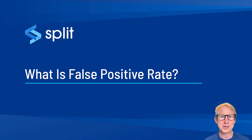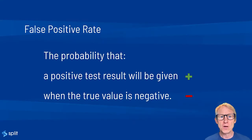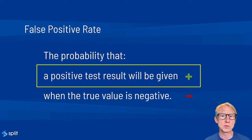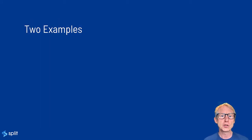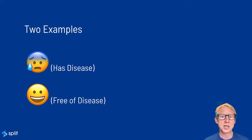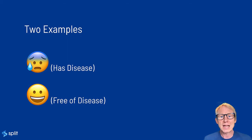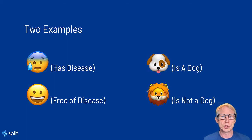What is false positive rate? False positive rate is the probability that a positive test result will be given when the true value is negative. Let's look at two examples. The first example is a medical test that checks for the presence or absence of a disease. The second example is a classification-based machine learning algorithm looking for the presence or the absence of a dog.